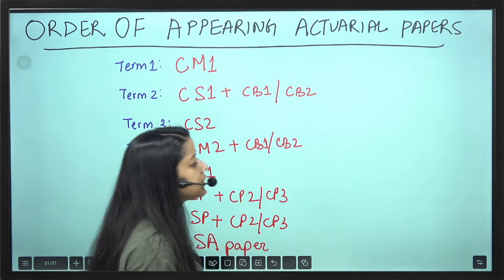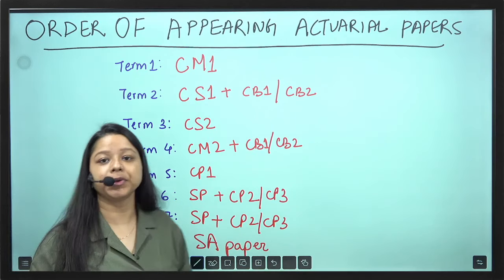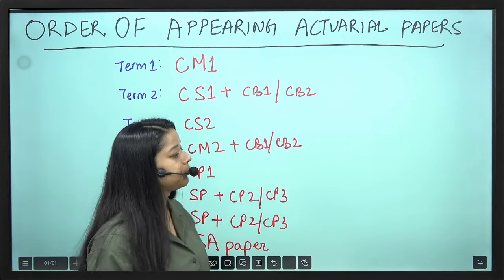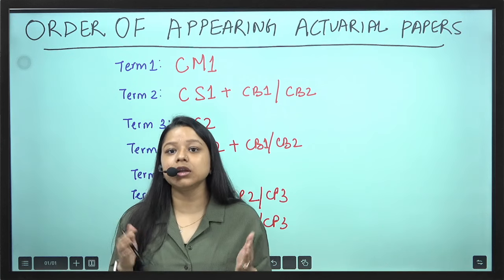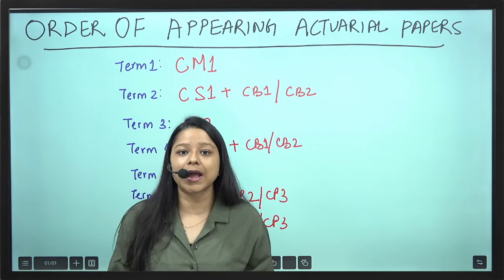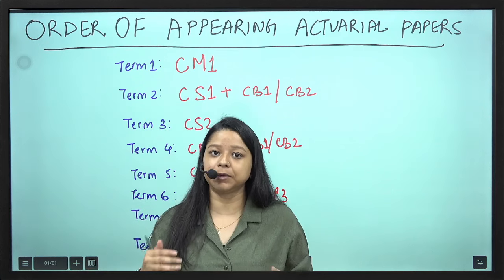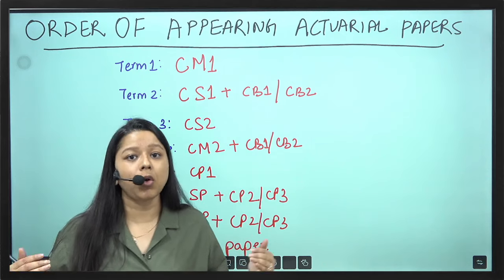Let's understand what is the order of appearing for actual examinations. There are 13 papers in total in actuarial science. You have to complete all these 13 papers in order to become a qualified Fellow.